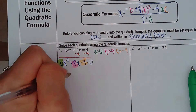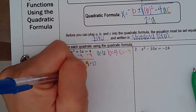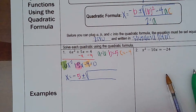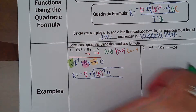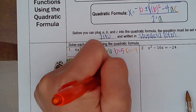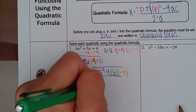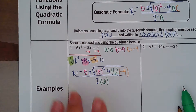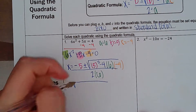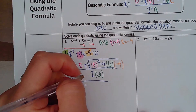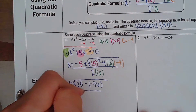x equals negative b, which is negative 5, plus or minus the square root of 5 squared minus 4 times my a value, which is 6, times my c value, which is negative 4, all over 2 times my a value, 6. Now I'm going to start simplifying. I have negative 5 plus or minus the square root of 25 minus negative 96, all over 12.